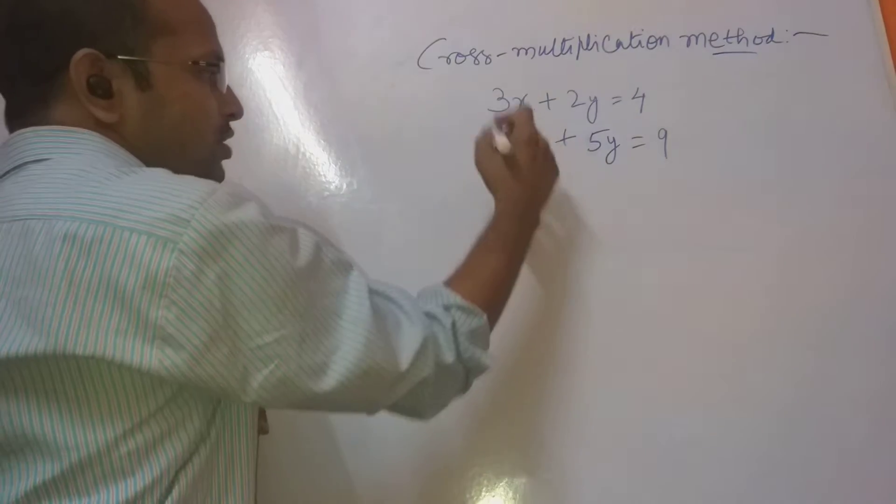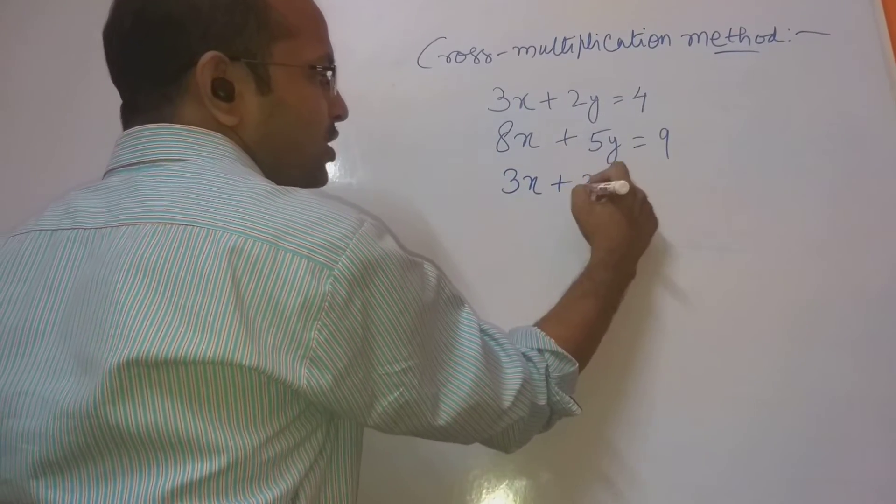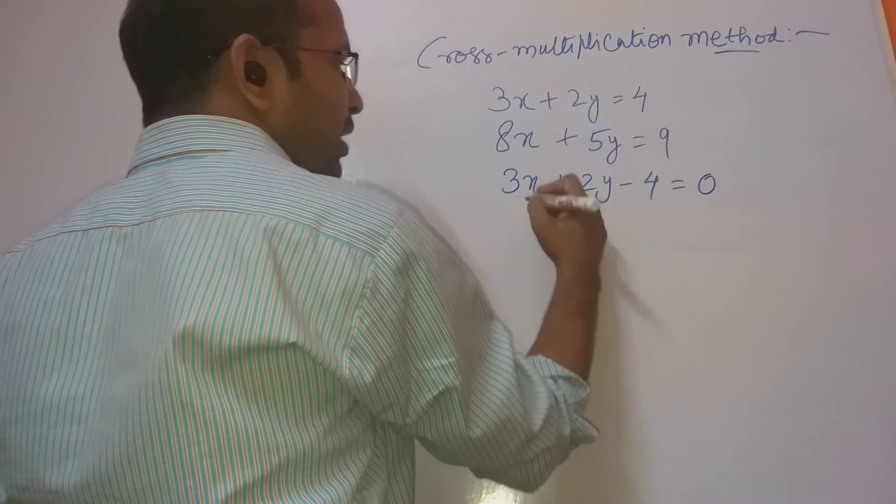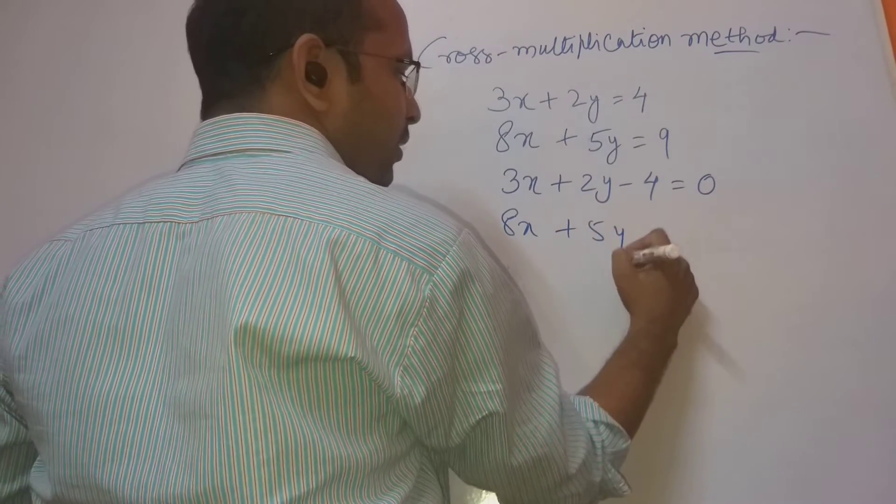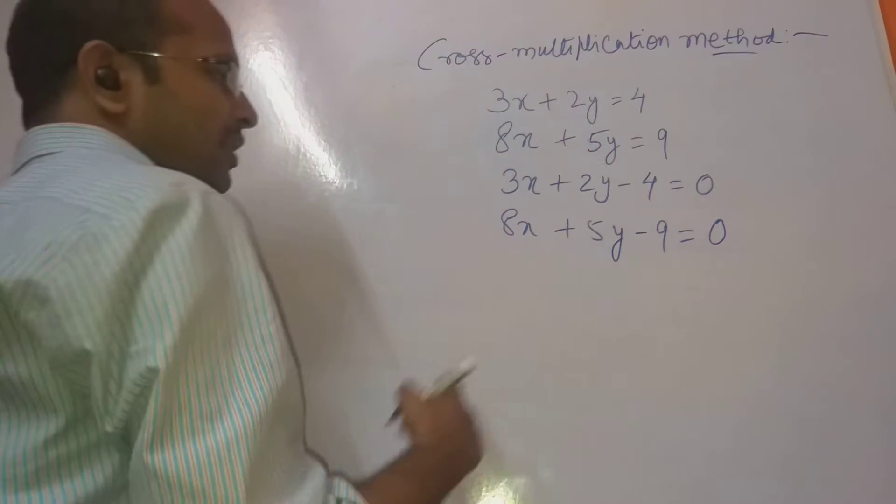What to do here? First of all, write the equations like this: 3x plus 2y minus 4 equals 0, and then 8x plus 5y minus 9 equals 0. We can write like this.